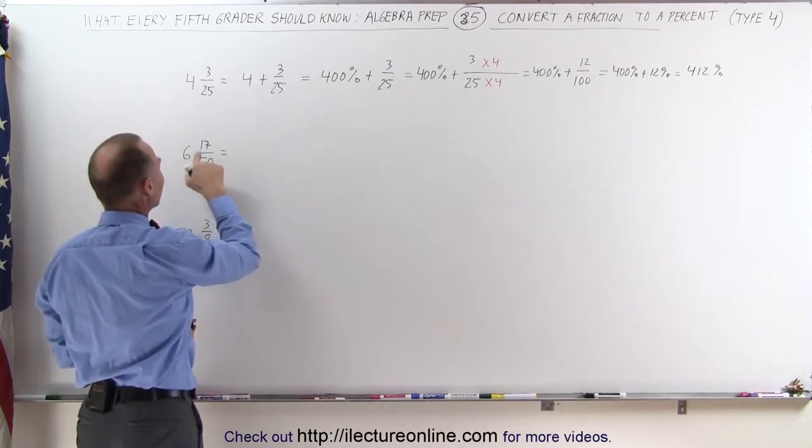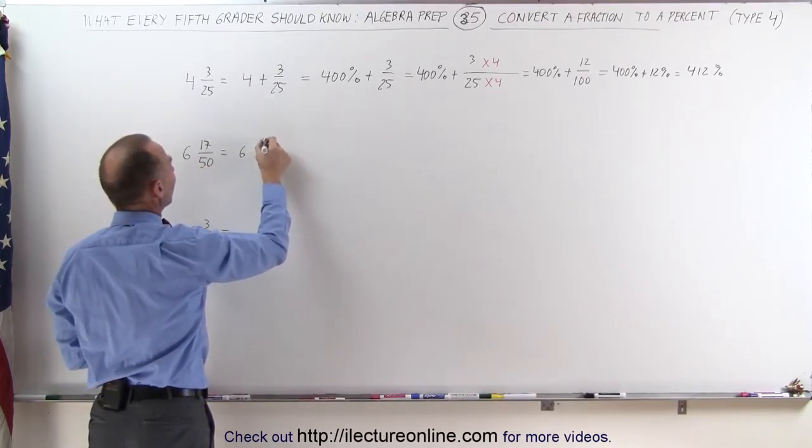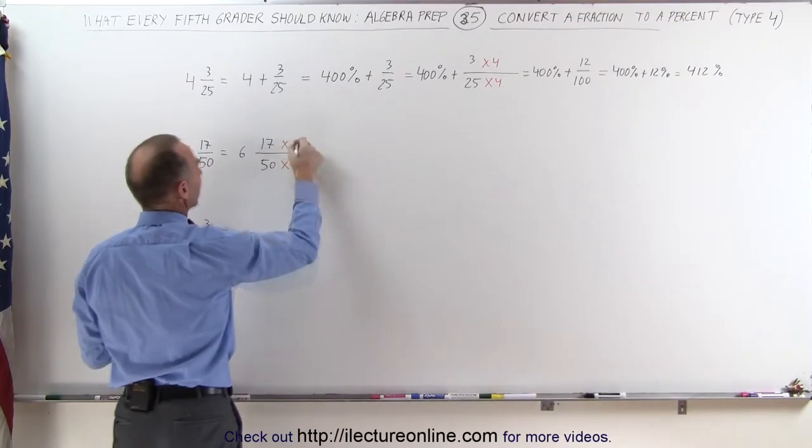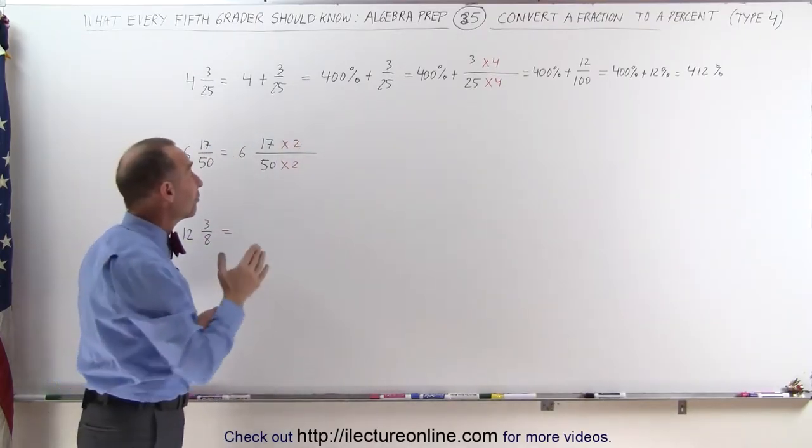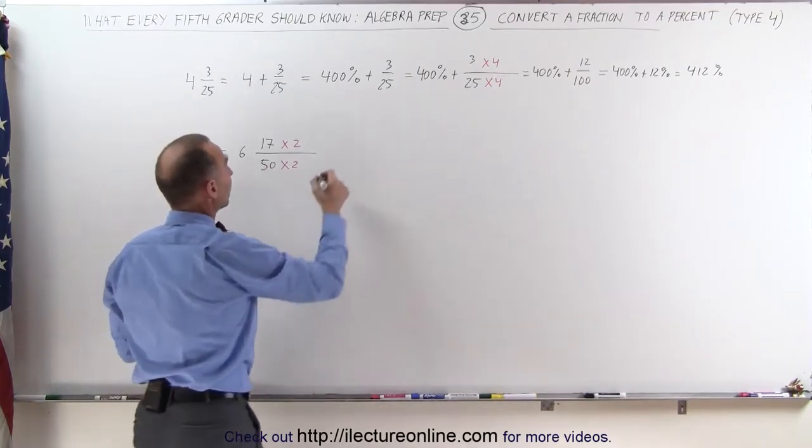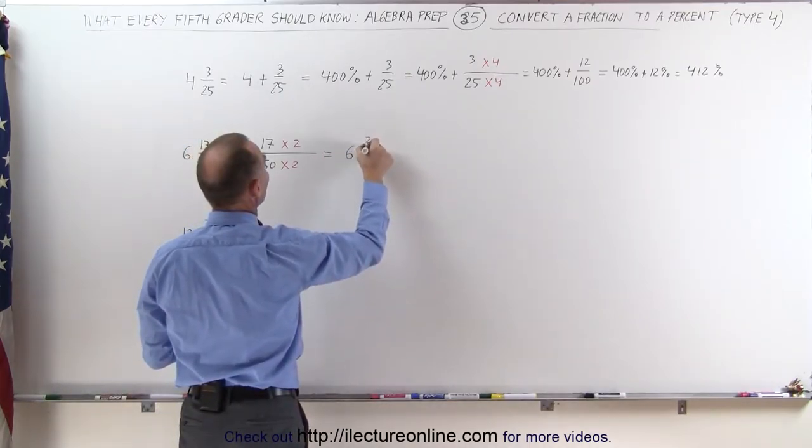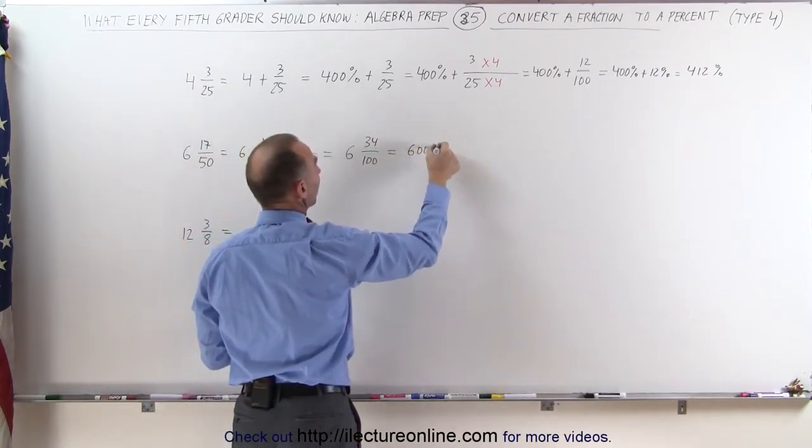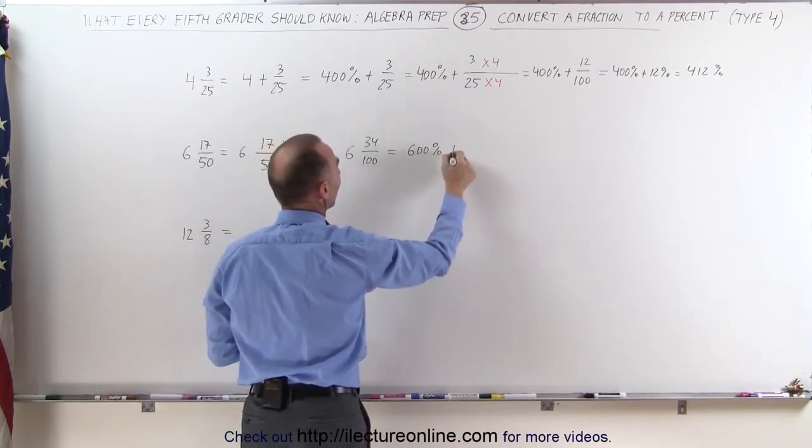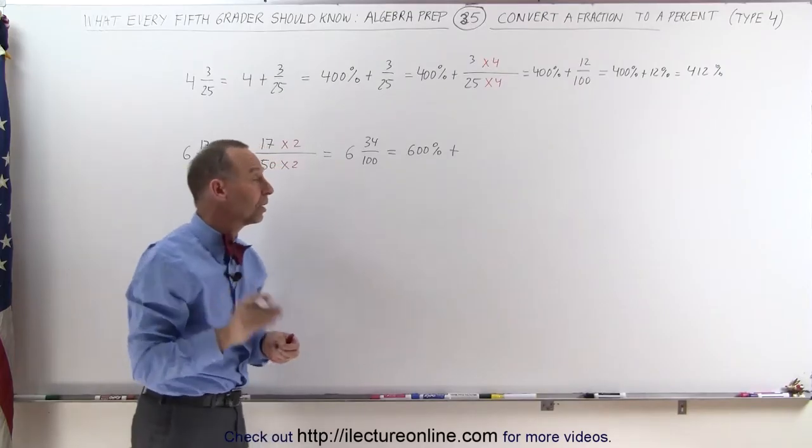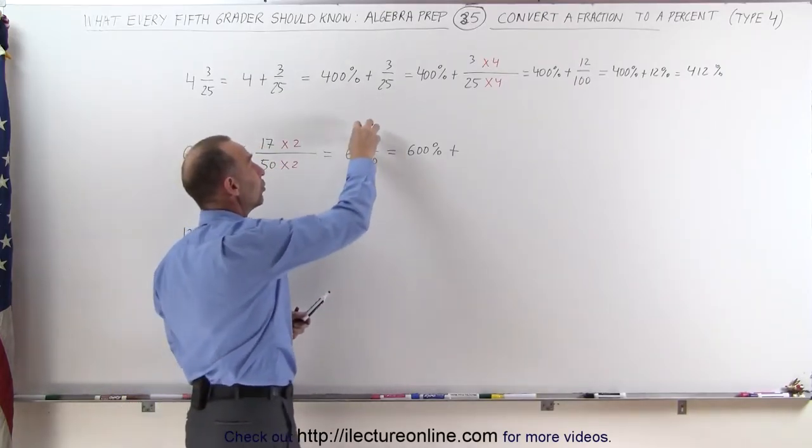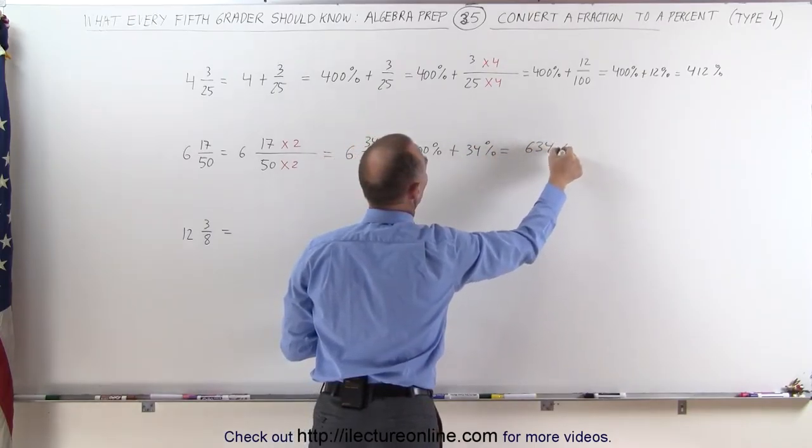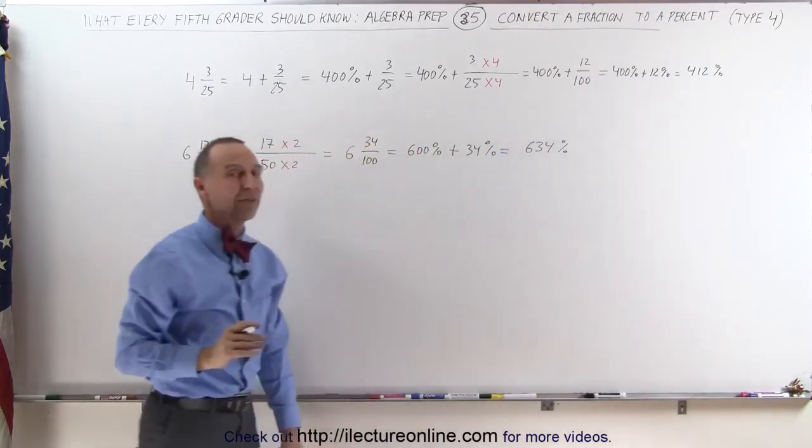Notice here I can write 6 and 17/50 and multiply both the denominator and the numerator by 2 like this, so that now I know I can write this as a fraction with 100 in the denominator. This can now be written as a mixed number 6 and 34/100, and then this can be written as 600% because 6 equals 600% plus any fraction whose denominator equals 100 can be written in terms of a percent by taking the numerator and putting a percent sign behind it. This then becomes 634%. Same technique as above, just doing it a little bit faster.